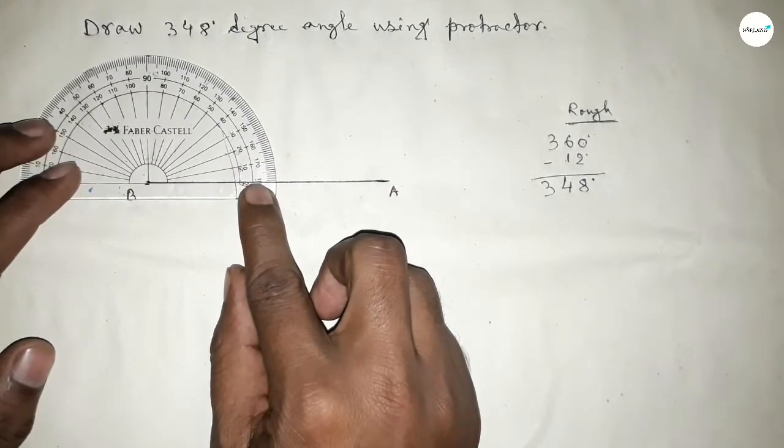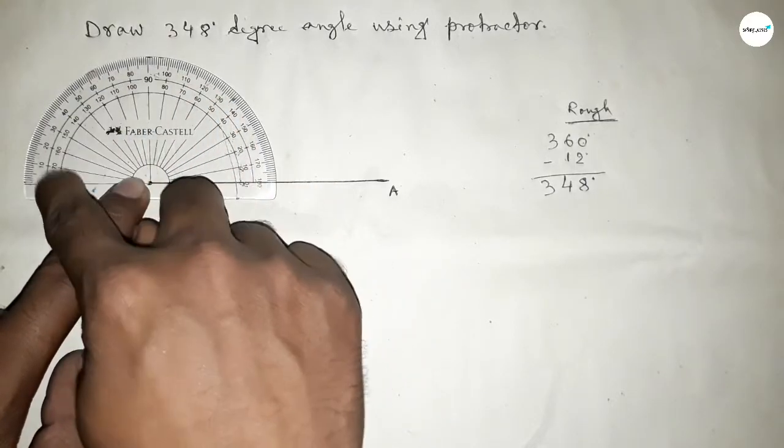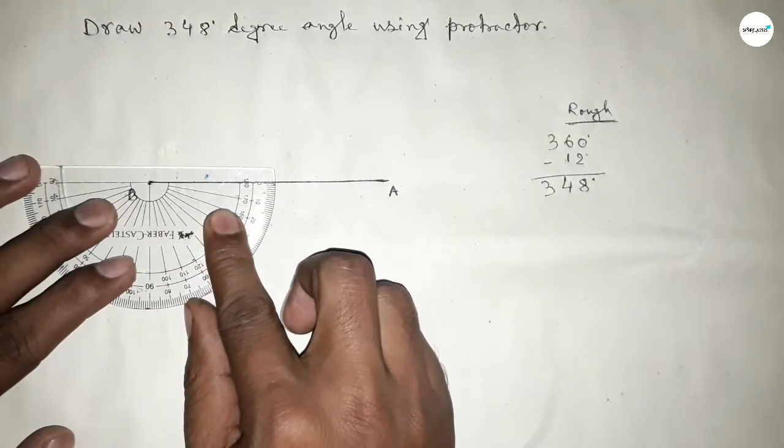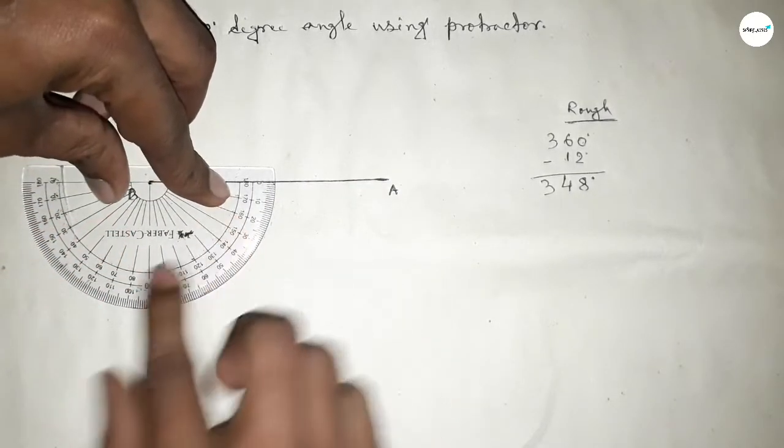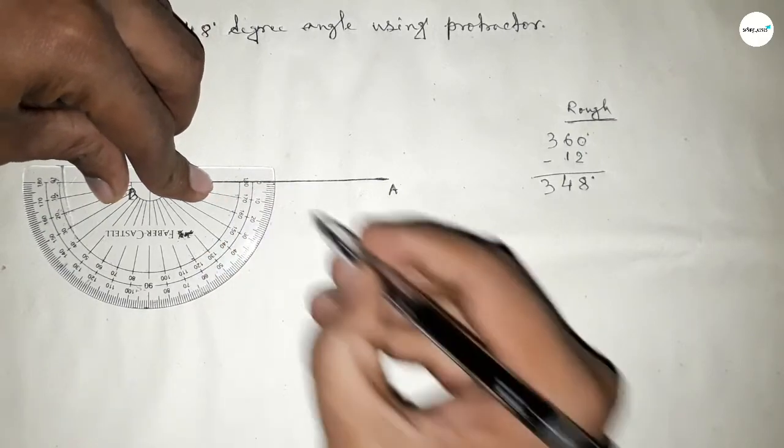Now putting the protractor on the point B by this way to draw 360 degrees. So here up to 180 degree angle, again putting the protractor on the point B by this way, so from this, total 360 degree angle.